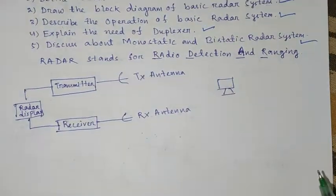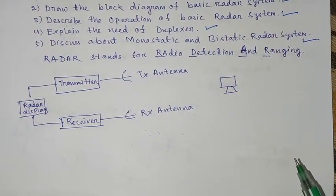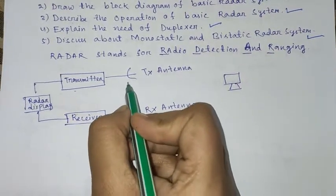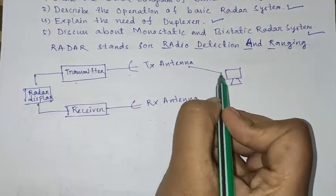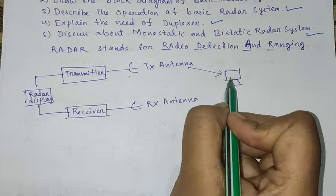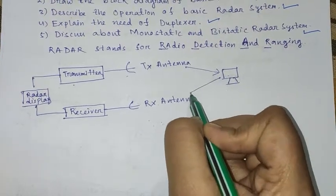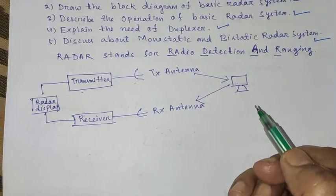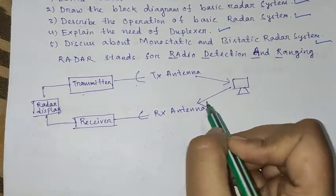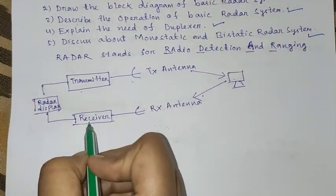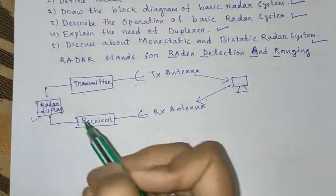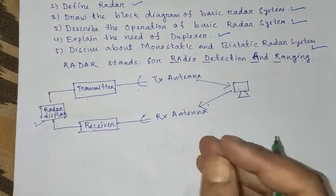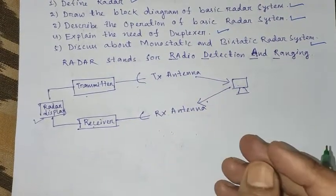The basic principle of this radar system is when the transmitter section transmits a radio signal towards a target, it strikes that target and the echo signal returns back towards the receiver. The receiver receives that signal, processes it, and gives it to the radar display to show the result—which may be range, angle, or velocity according to our requirement.